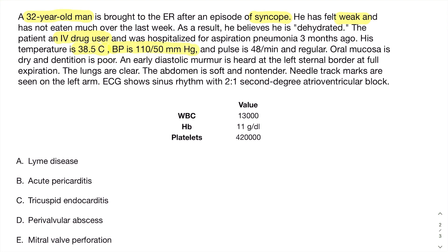His blood pressure shows a really low diastolic while his systolic is normal, which means his pulse pressure is high — the difference between systolic and diastolic. That seems like an important clue. His pulse is really normal.